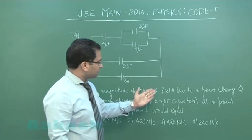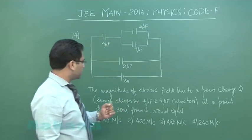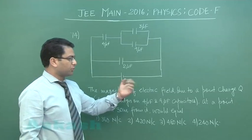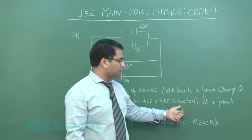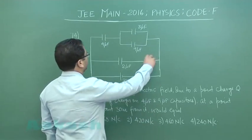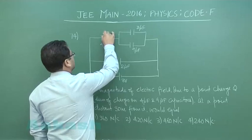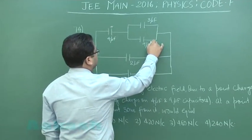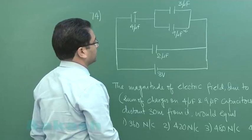The magnitude of electric field due to a point charge Q. Now how much is that point charge Q? Sum of charges on 4 microfarad and 9 microfarad. So the first thing is we need to calculate the charge on this capacitor and this capacitor.